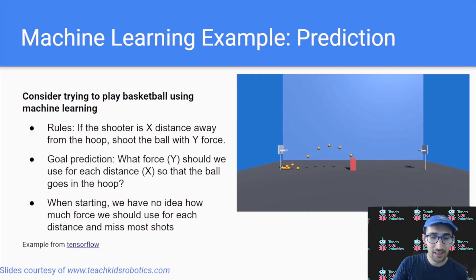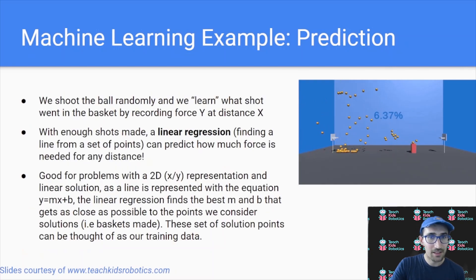When we begin without data, we have no idea of how much force is needed in order to make or miss a shot. But what we can do is actually shoot the ball randomly and learn what makes a good shot versus a bad shot by recording the force y at distance x whenever we make a basket.